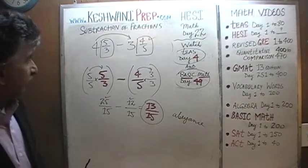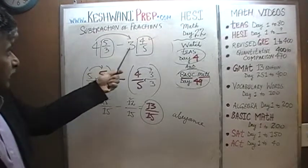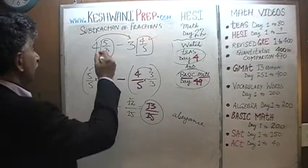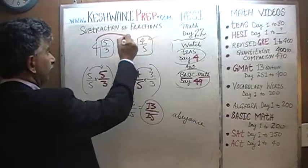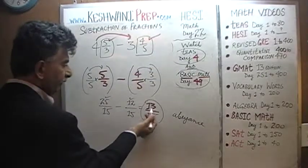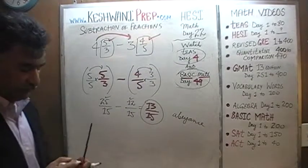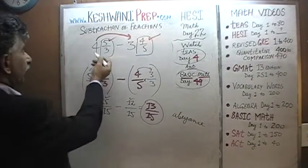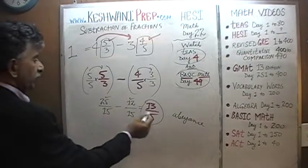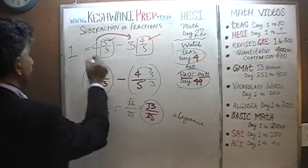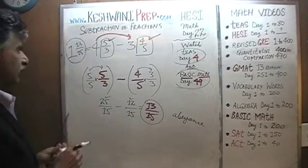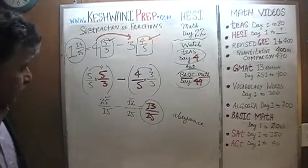4 minus 3 equals 1, and 5 thirds minus 4 fifths equals 13 over 15. So the final answer is 1 and 13 over 15. That's it — we are done.